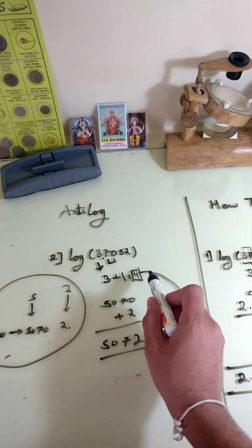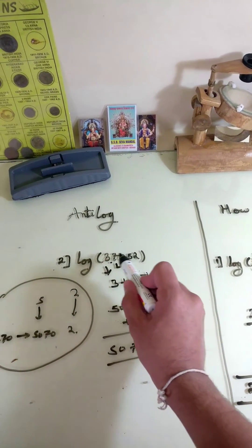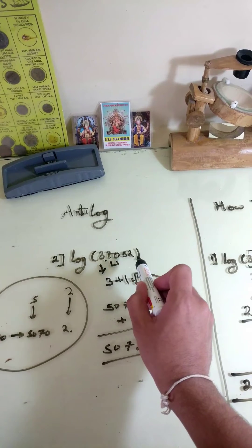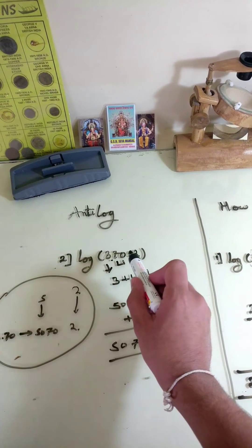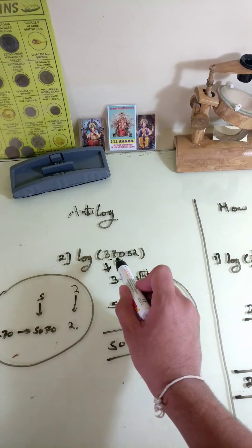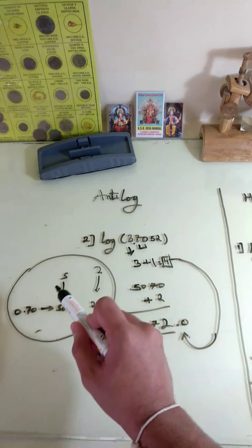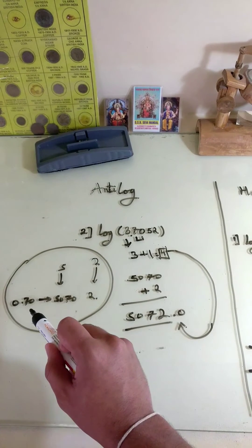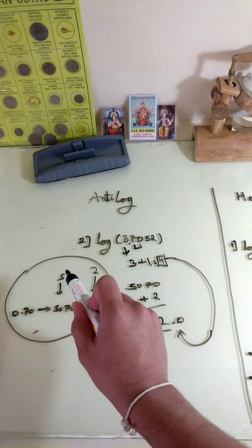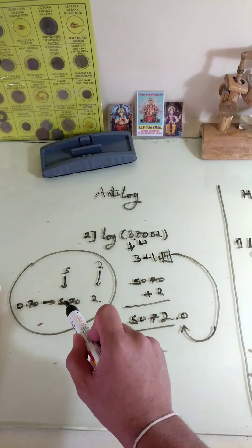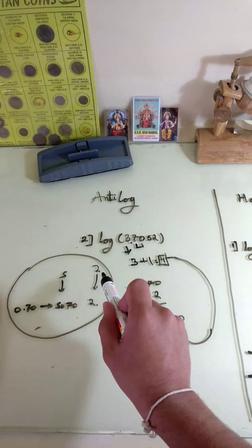Then, we find antilog of 7.052. In the same way, 70th row which is 0.70 in the 5th column and mean difference 2.